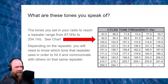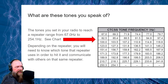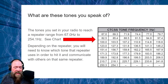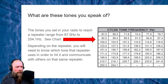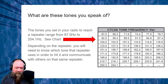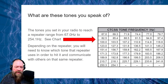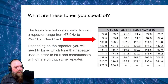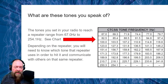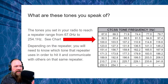So, what are these tones? Well, if you look at the chart on the right side here, the tones you set your radio to reach any repeater range from 67 Hz to 254.1 Hz. Depending on the repeater and its settings, you'll need to know which tone that repeater uses in order to communicate with others on the same repeater. So if there's a repeater in your area that you want to get on, you're going to have to figure out the frequency and get it programmed correctly so the repeater can hear you and retransmit you out to other people.